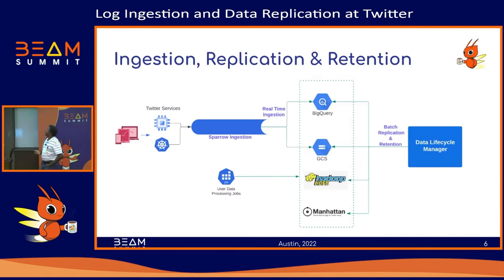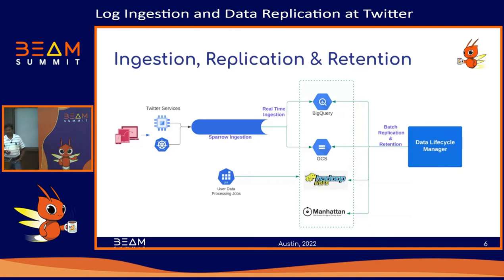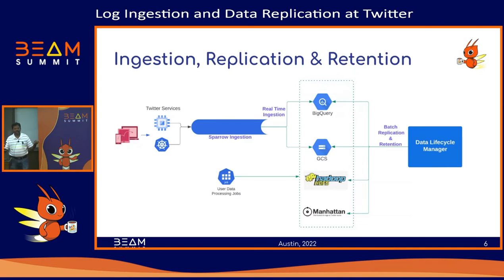With those goals, we started working on two projects: Sparrow and Data Lifecycle Manager. Sparrow is a real-time ingestion pipeline that ingests data from Twitter services to our analytics sinks in near real-time. As you interact with the Twitter application, requests go to internal services that emit log events for analytics workloads. Sparrow supports large-scale aggregations and real-time ingestion to BigQuery and GCS. Data Lifecycle Manager was designed to handle batch replication — keeping data in sync continuously between data lakes, data warehouse, and key-value stores.